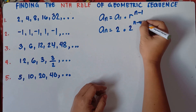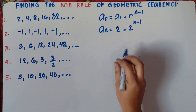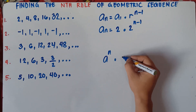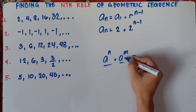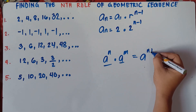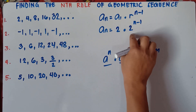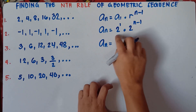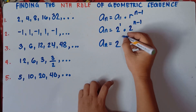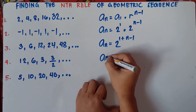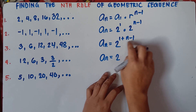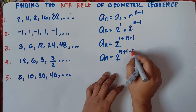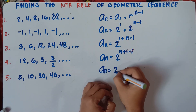So 2 raised to the power of n minus 1. Do not forget the rules in the law of exponent — the product rule. If they have the same base, a raised to the power of n multiplied by a raised to the power of m, you can copy the base and then add the exponents n plus m. So same base, which is 2 — understood that 2 here has an exponent of 1 — you add the exponents: 1 plus n minus 1. You can arrange this: n, then positive 1, negative 1. You can cancel these out because 1 minus 1 is 0.